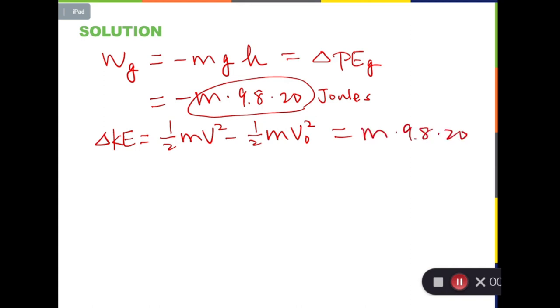And we know that v_0 is equal to 0 meters per second. That means the second term is gone. And the equation has been reduced to 1/2 times mv squared equals m times 9.8 times 20. And here you can tell that m can be cancelled, which is why m is not important.